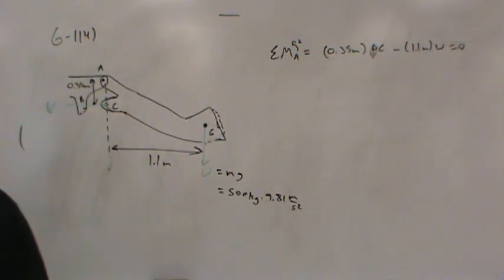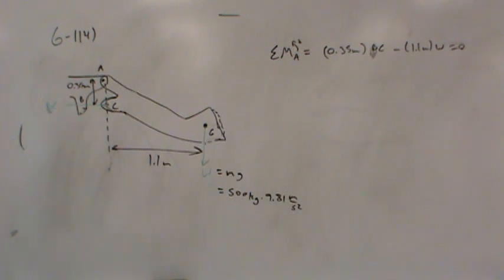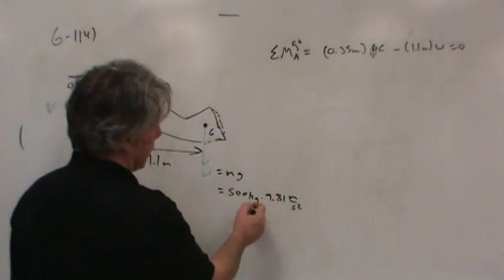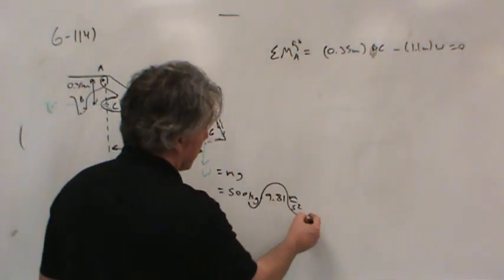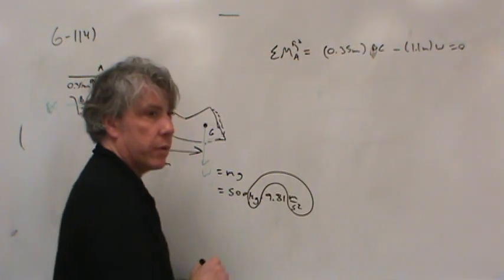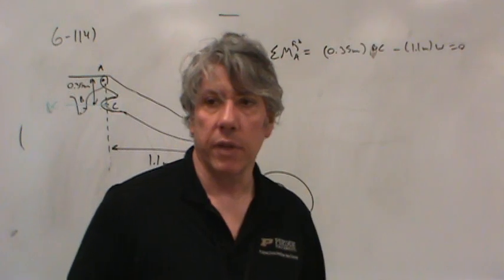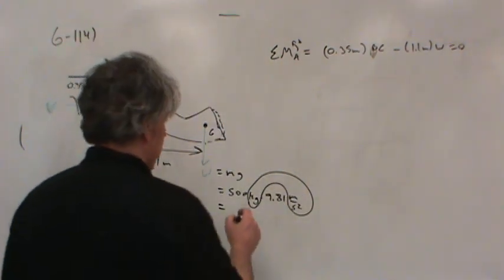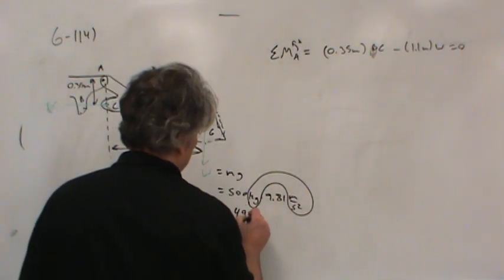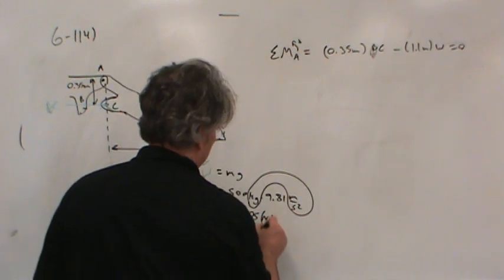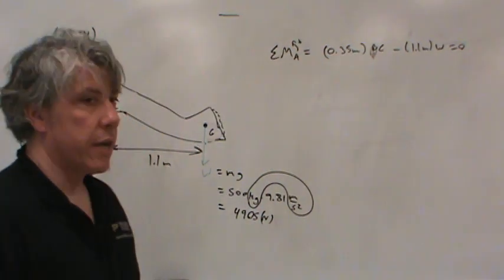You have to multiply that by 9.81 meters per second squared because that's the acceleration of gravity. Why not 32.2? That's English, feet per second squared. We need meters per second squared. What do we get when we multiply kilograms times meters per second squared together? So we need 500 times 9.81, which is 4,905 newtons.